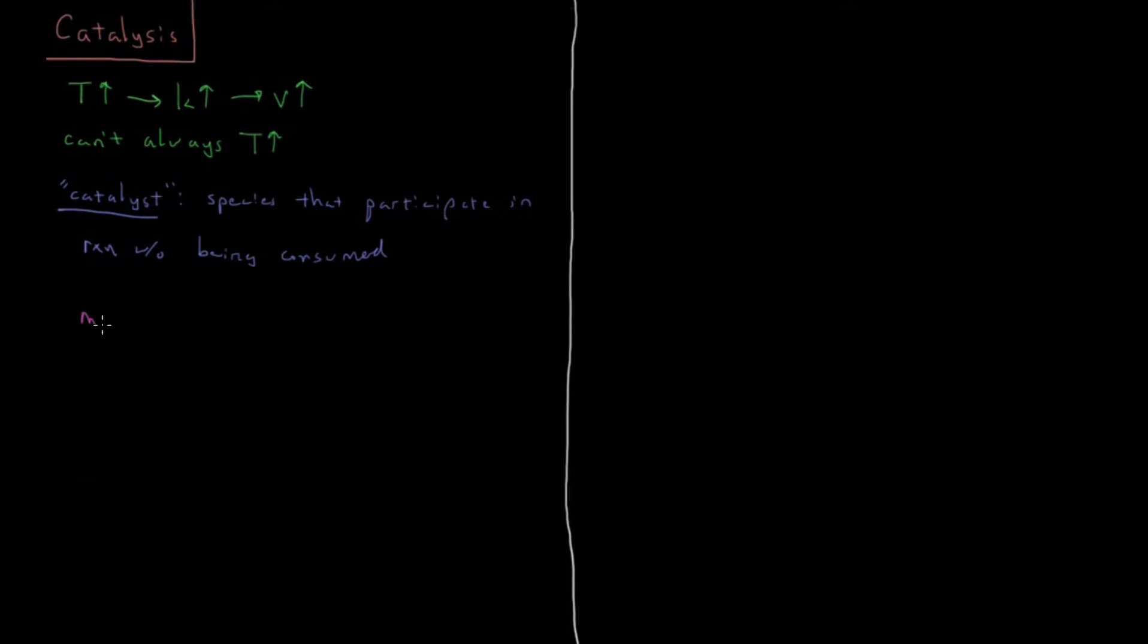So a catalyst works by lowering the activation barrier. I have a video on reaction coordinates and activation barriers. A catalyst makes the energy change of activation much smaller, and it doesn't change the equilibrium of the reaction. So it doesn't change the enthalpy of reaction, it doesn't change the Gibbs energy of reaction. It doesn't change any of the thermodynamics, it just changes the kinetics by making the activation barrier smaller.